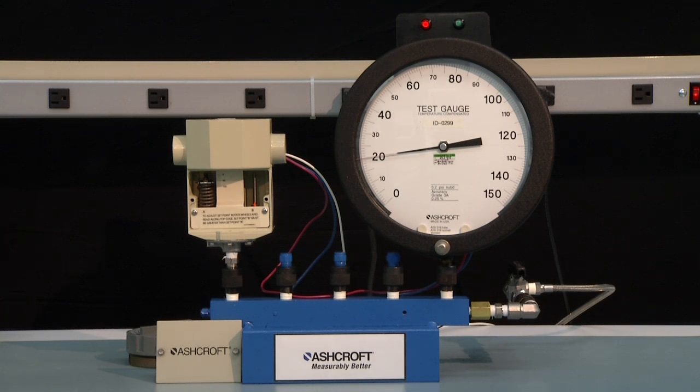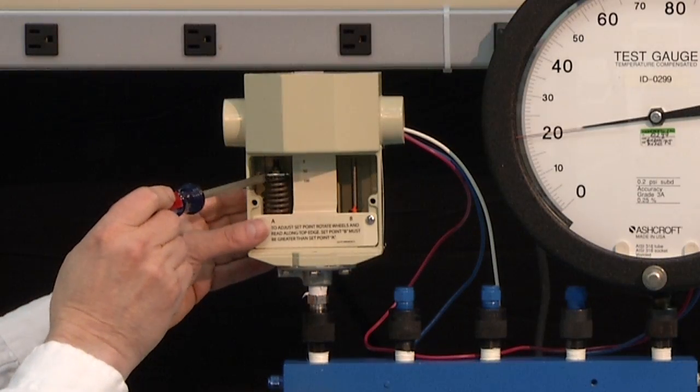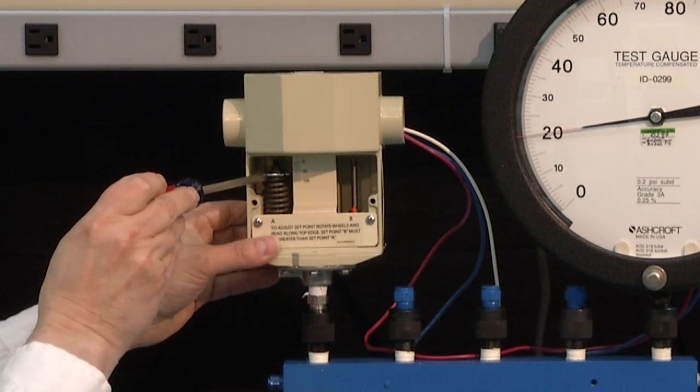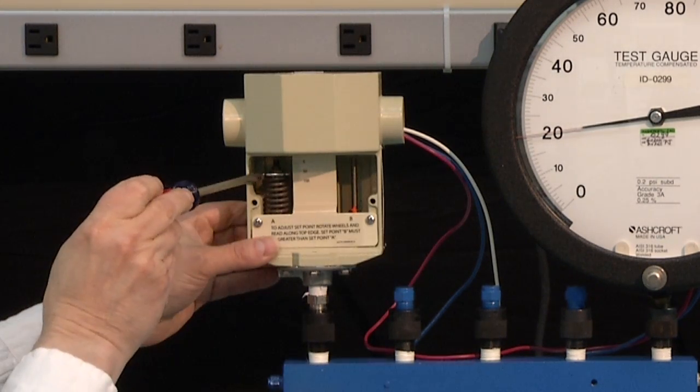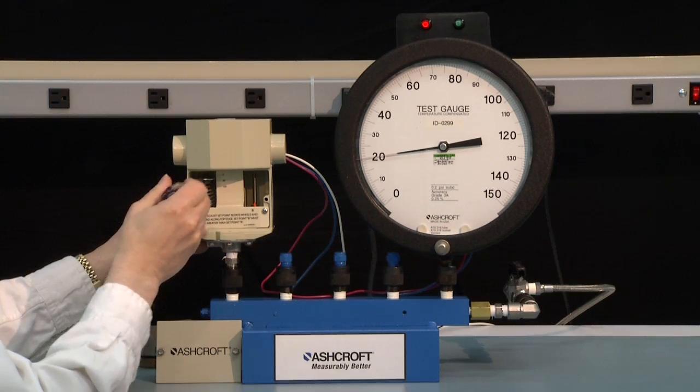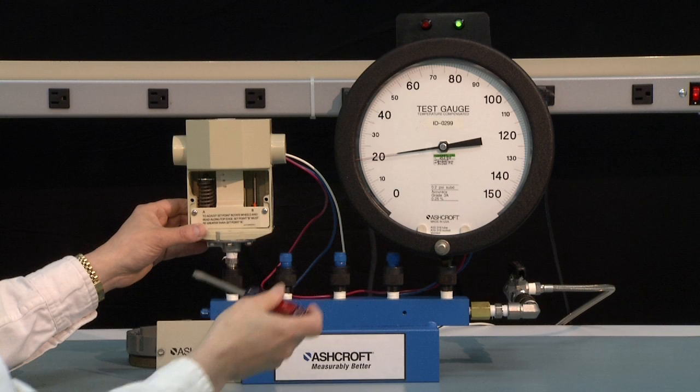With that, we are going to turn the adjustment wheel counterclockwise. That will lower the set point of the switch. We will turn it all the way down until the switch turns on at 20. So we are turning it counterclockwise to lower the set point. Now we just turned back on.